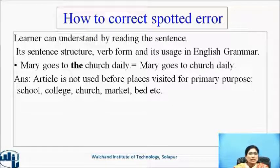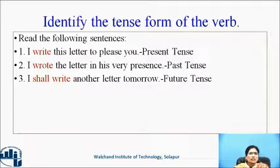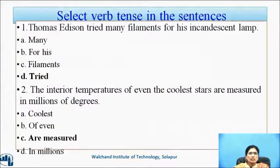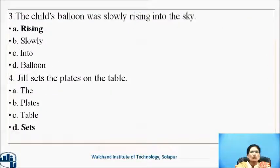How to spot the error: the learner can understand by reading the sentence, its sentence structure, verb form, and its usage in English grammar. Identify the tense form of the verb. Three sentences are given: 'I write this letter to please you' — present tense. 'I wrote the letter' — past tense. 'I shall write another letter tomorrow' — future tense. Select the verb tense: 'Thomas Edison tried many filaments for his incandescent lamp' — tried is the verb. 'The interior temperatures of even the coolest stars are measured in millions of degrees' — measured is the verb form. 'The child's balloon was slowly rising into the sky' — rising is the verb form.